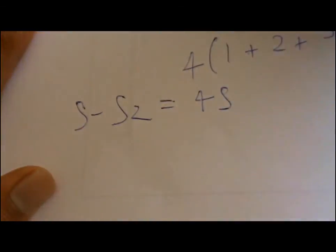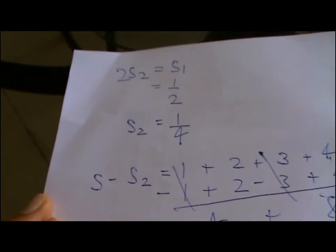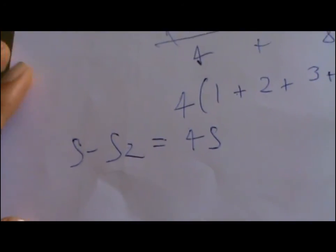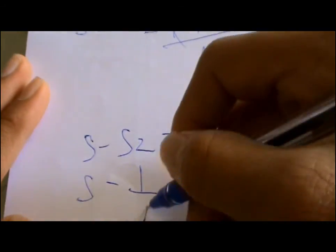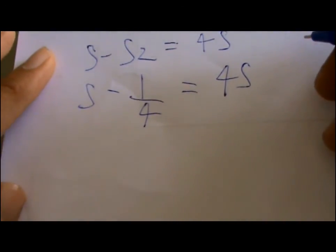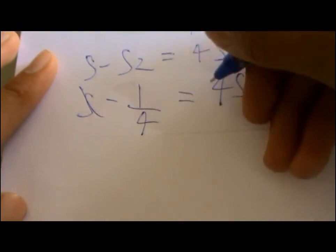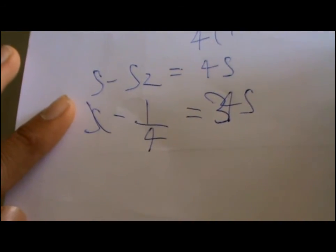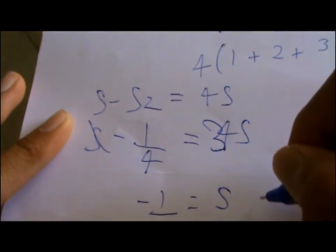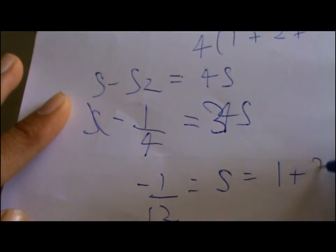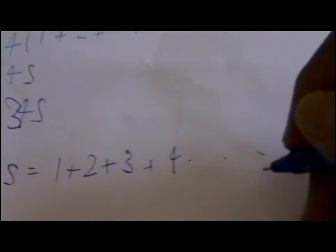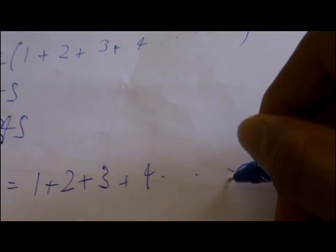And as we found out, S2 was one by four. So S minus one by four equals 4S. But this is a simple equation. This goes to this side and becomes 3S. And if you transpose three on this side, minus one by twelve equals S. And S equals our final answer: one plus two plus three plus four until infinity.